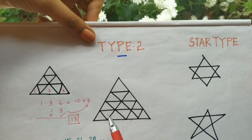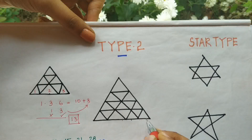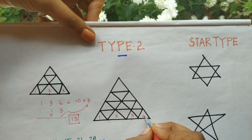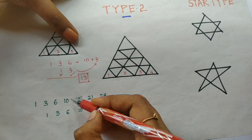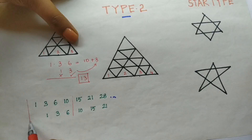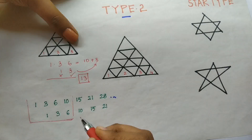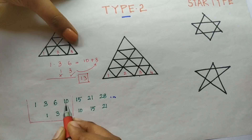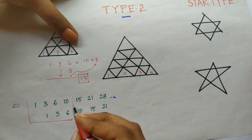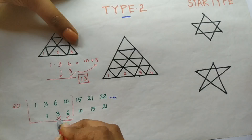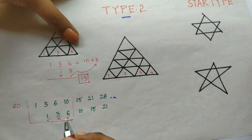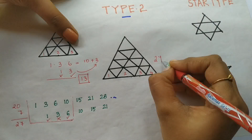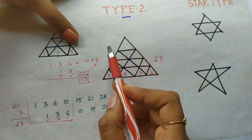Let's look at another example. Count the base: one, two, three, four — so we take four digits from the series: one, three, six, ten. Add the top numbers: ten plus ten equals twenty. Then take the first number and skip the second — the third number is seven. So the answer is twenty plus seven, which equals twenty-seven. There are twenty-seven triangles in this particular image.